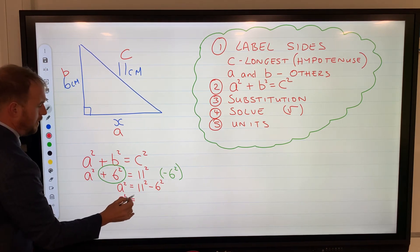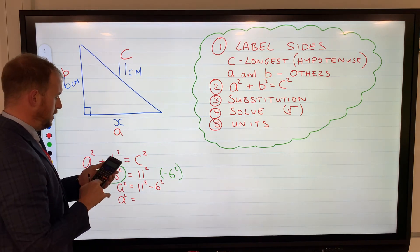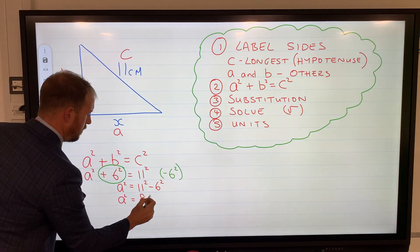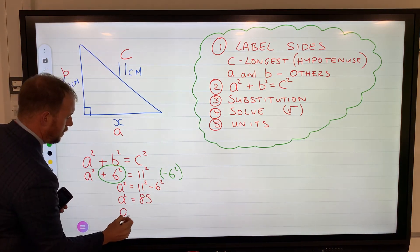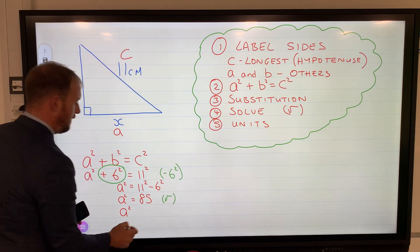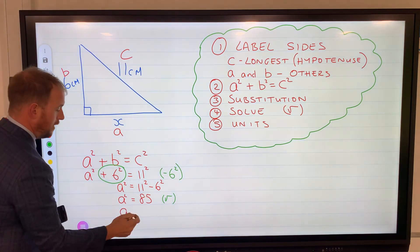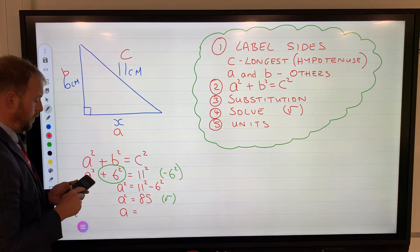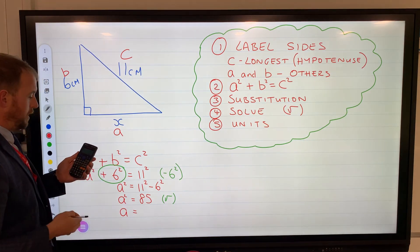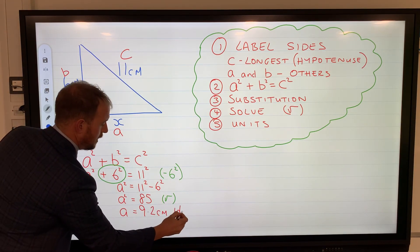A squared equals the answer to this bit, so I've got 11 squared subtract 6 squared, which is 85. Don't forget we need to square root to find the value of a, because at the moment this is just the value of a squared. The square root of 85, square root of my answer, equals 9.2 centimeters to one decimal place.